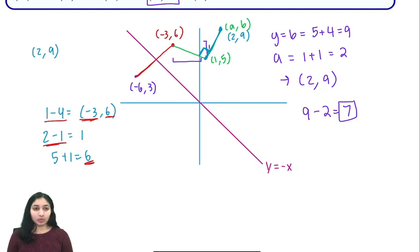Then we're going to reflect about the y equals negative x axis. So all we have to do is plug our point in, and we'll see that the reflection is (-6,3).